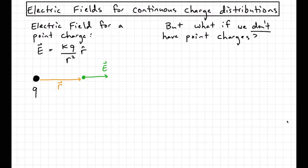So if the charge is positive, we get electric fields that point away. If the charge is negative, we get electric fields that point towards. But what if we don't have point charges?